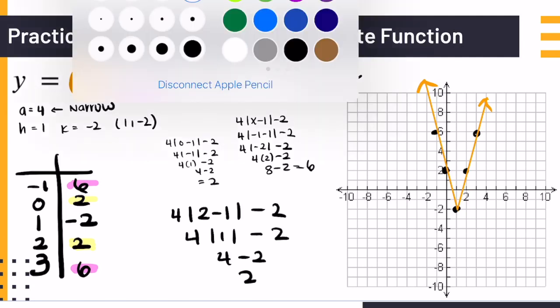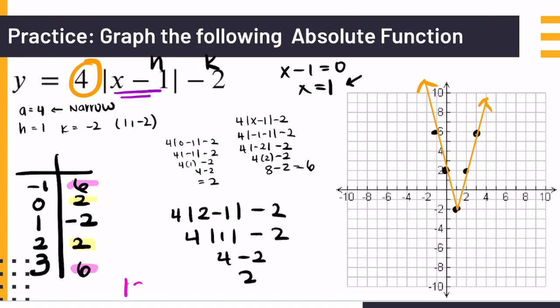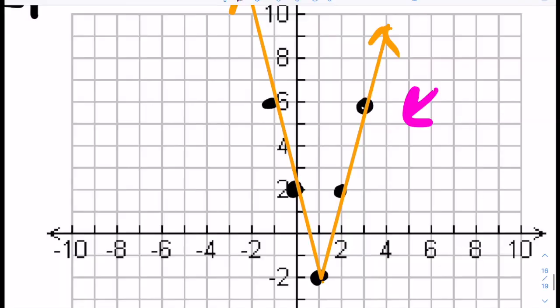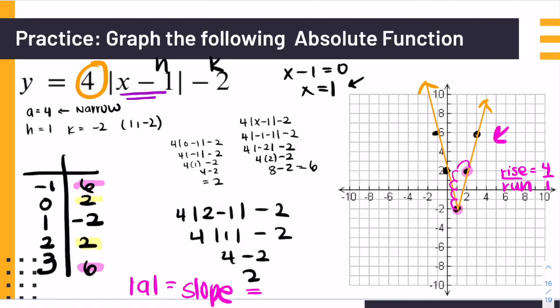Now let's bring back the a value. Our a value is 4. Remember, the absolute value of a is the slope. So let's look at the line here. Remember, slope is rise over run. If we go from the point here and go up to here, notice that we're going up 1, 2, 3, 4. So our rise is 4 and our run is 1. As a confirmation, our slope is in fact 4. And if we look at the other line, notice we go down negative 4 and right 1. If you take the absolute value of this, it is still 4.